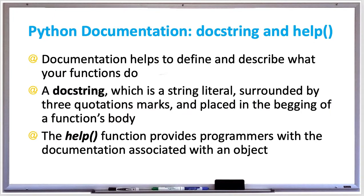Documentation is a very important part of any programming language, including Python. Documentation helps define and describe what functions in your programs do. You could add comments around your code that describes what the code is doing, but a better alternative is to create a docstring, which is a string literal surrounded by three quotation marks and placed at the beginning of your function's body. Once you create docstrings for all your functions, you or another programmer can call the help function to get the documentation associated with an object or your function.